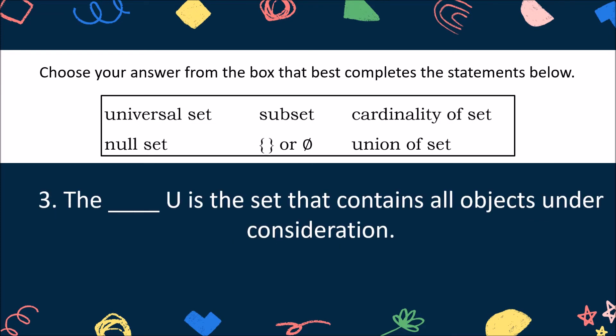Number 3. The blank U is the set that contains all objects under consideration. You got it right! The correct answer is universal set.